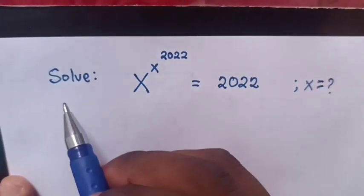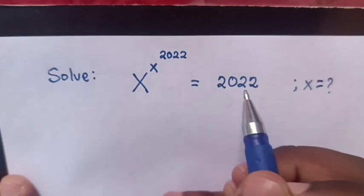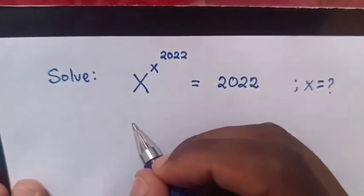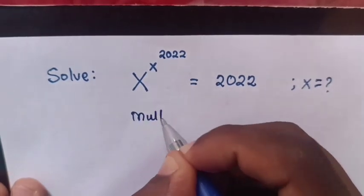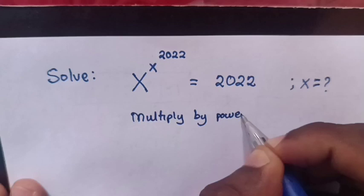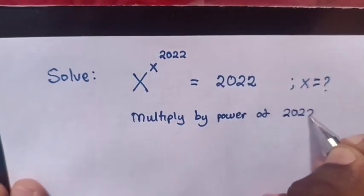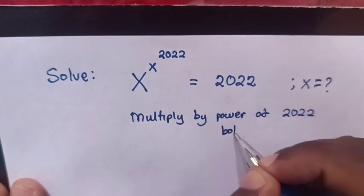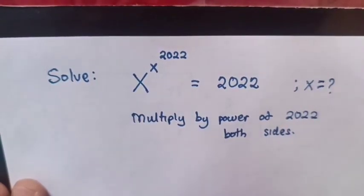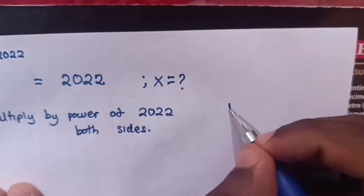Hello. To solve x power of x power of 2022 equals 2022, find the value of x. First, we multiply by power of 2022 on both sides and apply the exponential power rule.